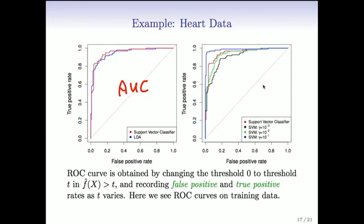In the right panel, we compare the linear support vector classifier, which is the red curve, to the SVM using a radial kernel with different values of gamma. And you'll notice that it's not monotone. When gamma is 10 to the minus 1, we seem to do really well. When gamma is 10 to the minus 2, that's the green curve, we do worse than the red curve. And 10 to the minus 3, even worse again.